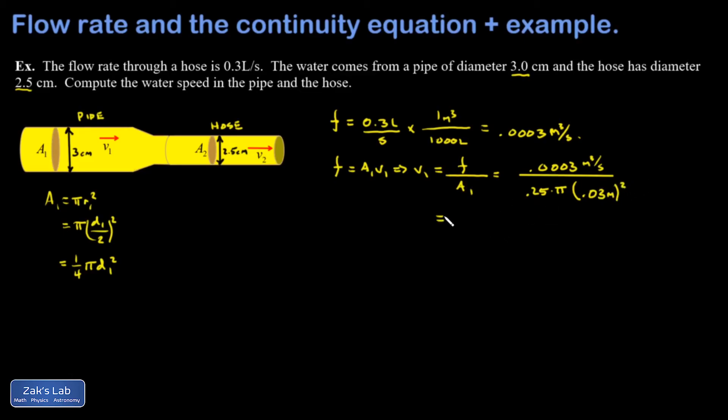Check out the units for a second. I have cubic meters per second in the numerator and meters squared in the denominator. Two factors of meters are going to cancel, leaving me with meters per second. So that's good. And I end up with 0.424 meters per second for the fluid speed at 0.1.